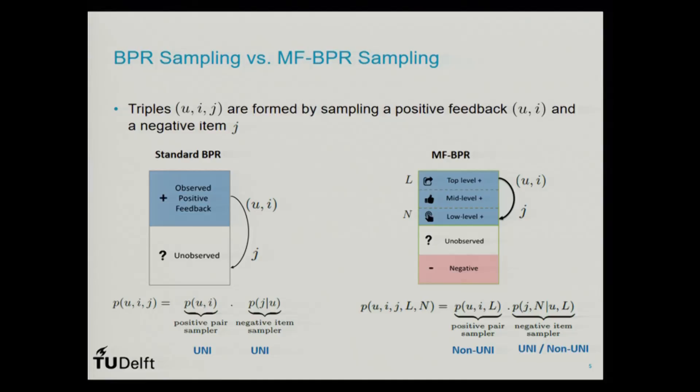In our paper, we define how these distributions are formally defined — you can find the details there. The high-level difference between our distributions and standard BPR is that standard BPR uses uniform distributions over the data, whereas in our method we can have non-uniform samplers that take into account the level or importance of the feedback in order to perform sampling.